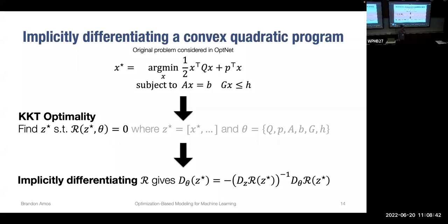Much of this work focuses on computational issues when integrating these layers. The Jacobian is very high-dimensional, so we usually don't compute it explicitly — we integrate it into systems that optimize a downstream loss. More details are available in the referenced papers.